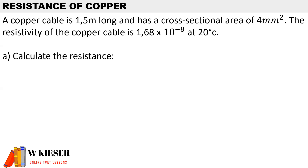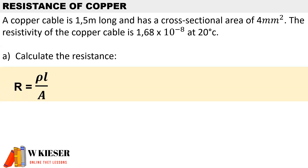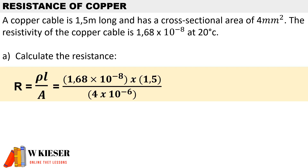In this example, a copper cable is 1.5 meters long and has a cross-sectional area of 4 millimeters squared. The resistivity of the copper cable is 1.68 times 10 to the power of minus 8 at a temperature of 20 degrees. To calculate the resistance, it is the resistivity multiplied by the length divided by the cross-sectional area. To convert millimeters squared into meters squared, we multiply by 10 to the power of minus 6. Therefore, the resistance is 0.0063 ohms.